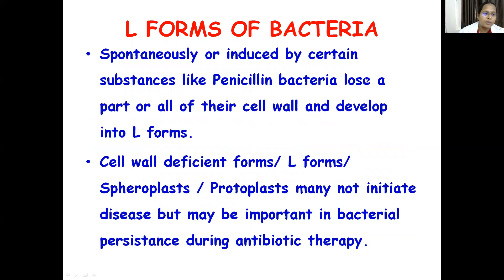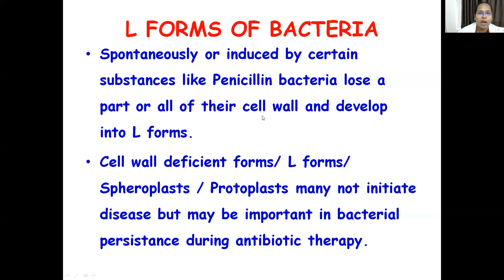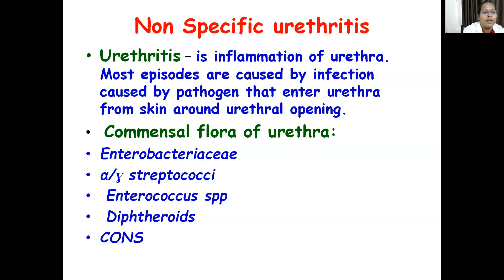The next topic is L-forms of bacteria. Either spontaneously or due to substances like penicillin, bacteria lose part or all of their cell wall and develop into L-forms — also called protoplasts or spheroplasts. These cell-wall-deficient forms may not initiate disease but are important in bacterial persistence during antibiotic therapy, because antibiotics acting on the cell wall cannot act on them, resulting in disease progression.